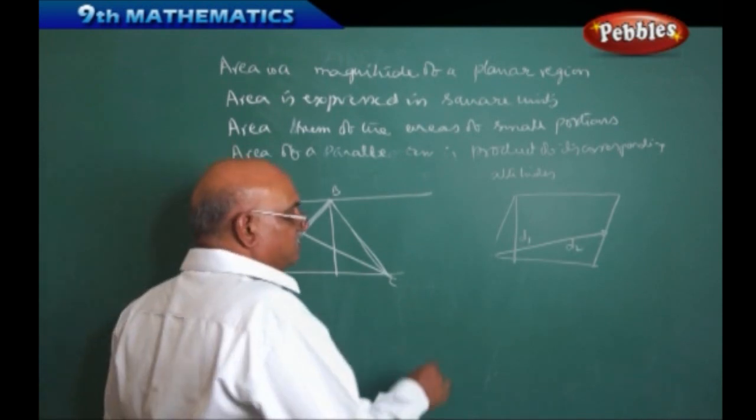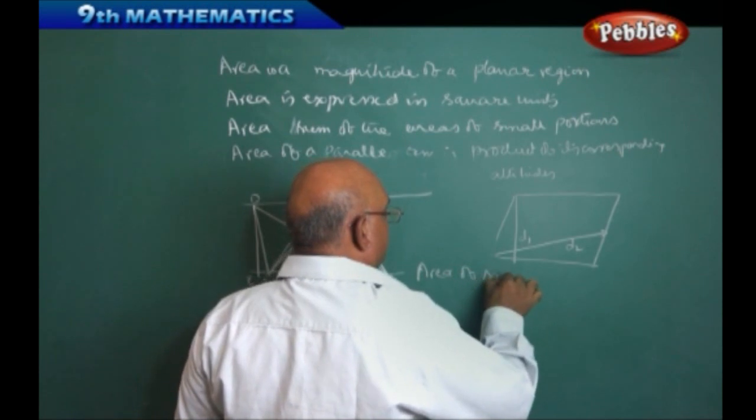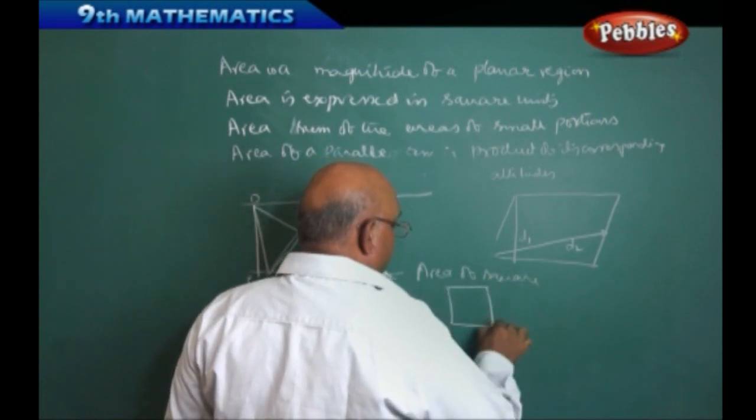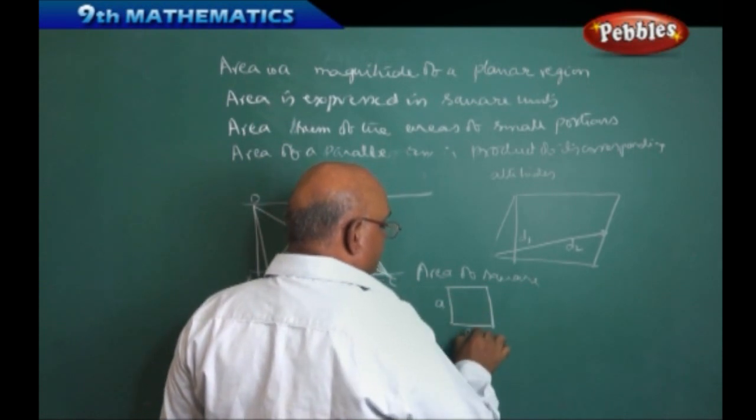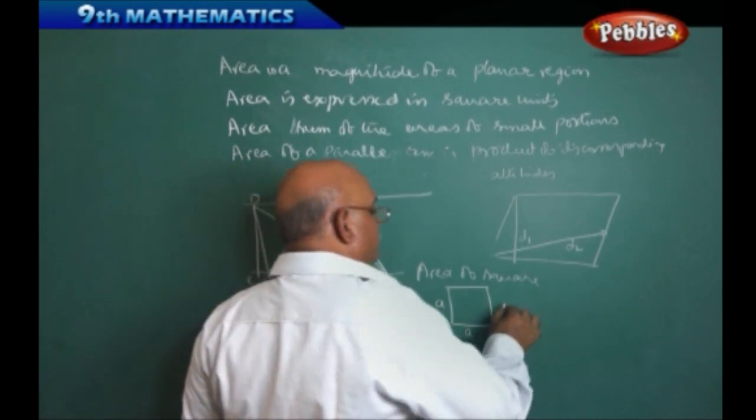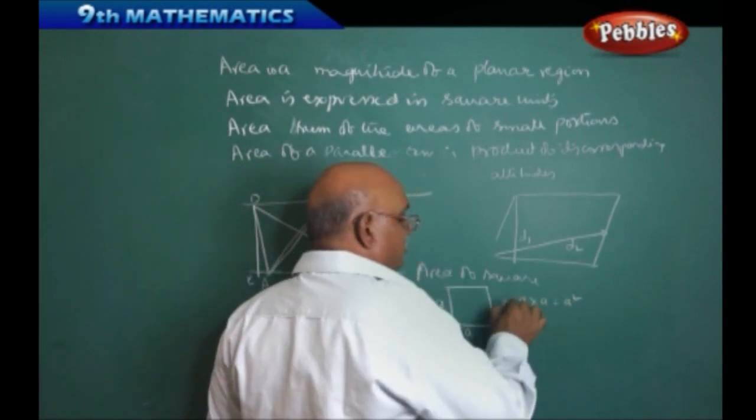Next, we have seen that, area of a square, we have seen that the side into side, let us call it as the side A. Therefore, A into A will give you, A into A is equal to A square is the area of this.